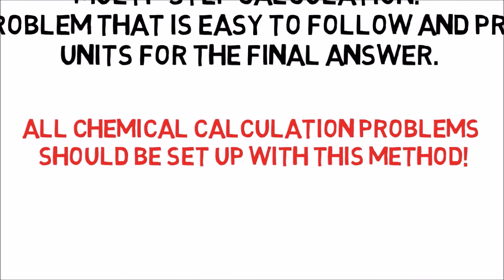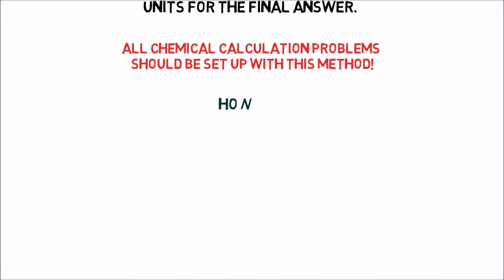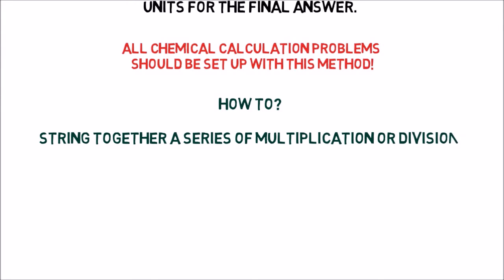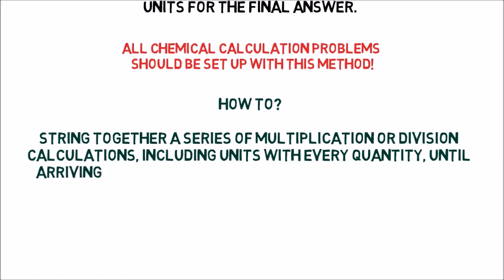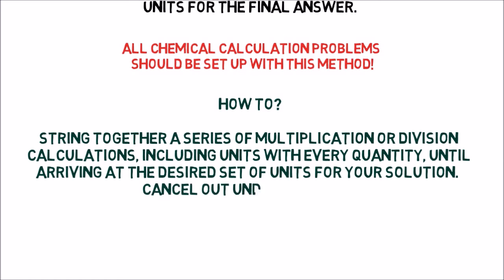To lay out a problem with unit analysis, string together a series of multiplication or division calculations. Include units with every quantity until arriving at the desired set of units for your solution. To make sure your problem is set up correctly, cancel out intermediate units before doing the actual calculation. When you are confident your problem is arranged correctly, calculate your answer.